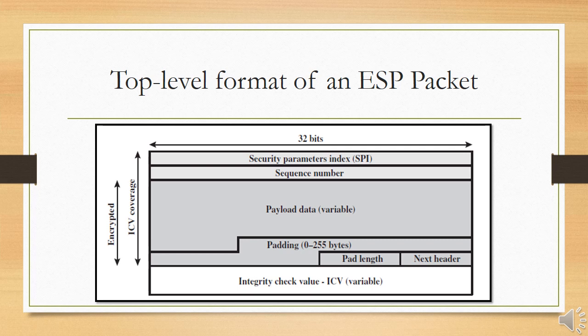The Pad Length field is 8 bits and indicates the number of pad bytes immediately preceding it. The Next Header field is 8 bits and identifies the type of data contained in the payload data by identifying the first header in that payload. The Integrity Check Value (ICV) is a variable-length field containing the ICV computed over the ESP packet minus the authentication data field.